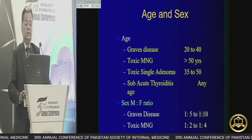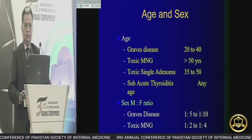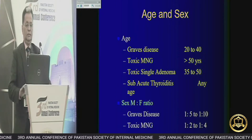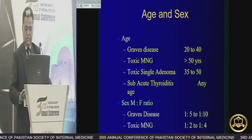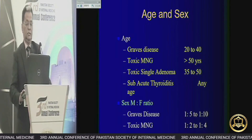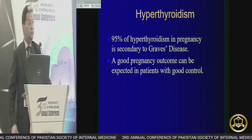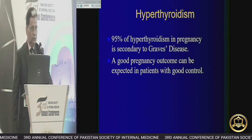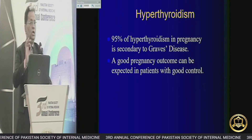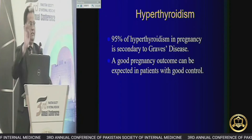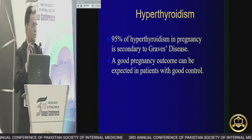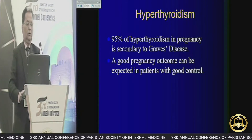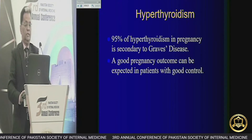Graves disease is a disease of young age. We will consider Graves disease in pregnant ladies aged 20 to 40 years. Most patients have Graves disease, but some have subacute thyroiditis. 95% of hyperthyroidism in pregnancy is secondary to Graves disease. If there is any eye sign, it is Graves disease — nothing else. Good pregnancy outcome can be expected in a patient with good control.